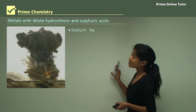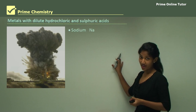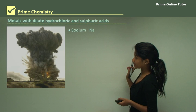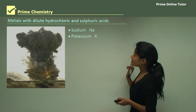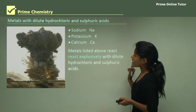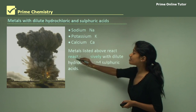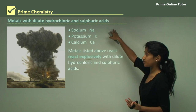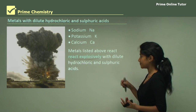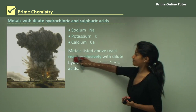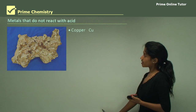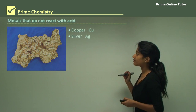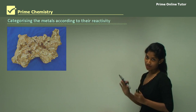Now metals that react with dilute hydrochloric acid and sulfuric acid: sodium, potassium, and calcium react with dilute acids. They react explosively — in other words, they produce an explosion in the presence of dilute acids. Also, some metals don't react at all with acids.